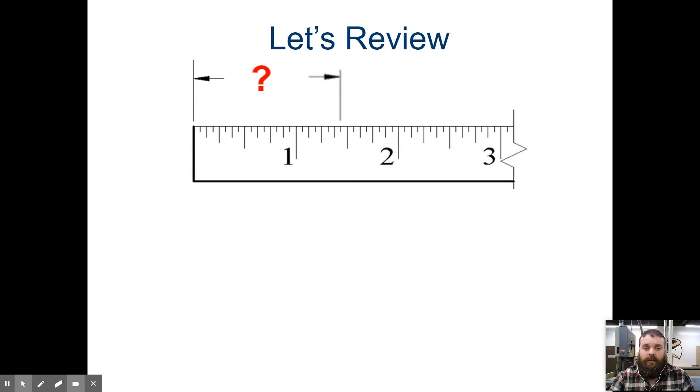If we look at the ruler ahead, we can see that we are past the whole inch. Note that these lines coming off of the ruler are called extension lines. These lines that are leading us from our mystery measurement to what we're measuring, these are called leader lines. They lead us to our extensions from the object.